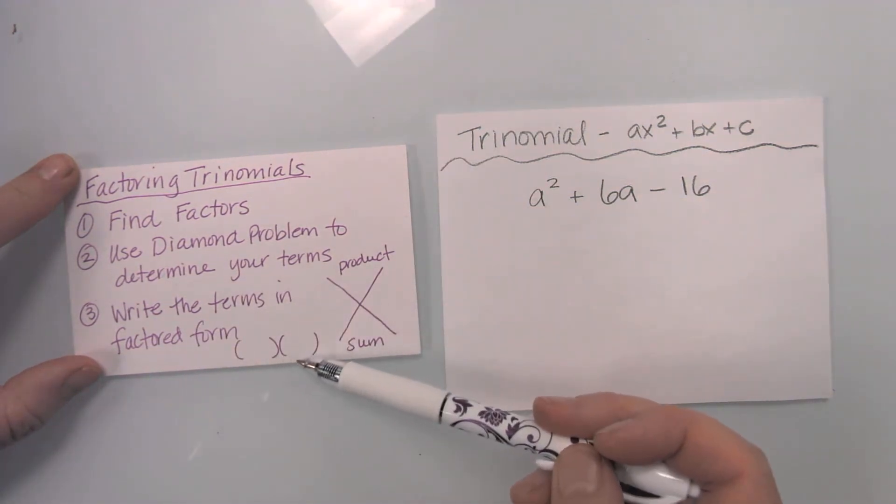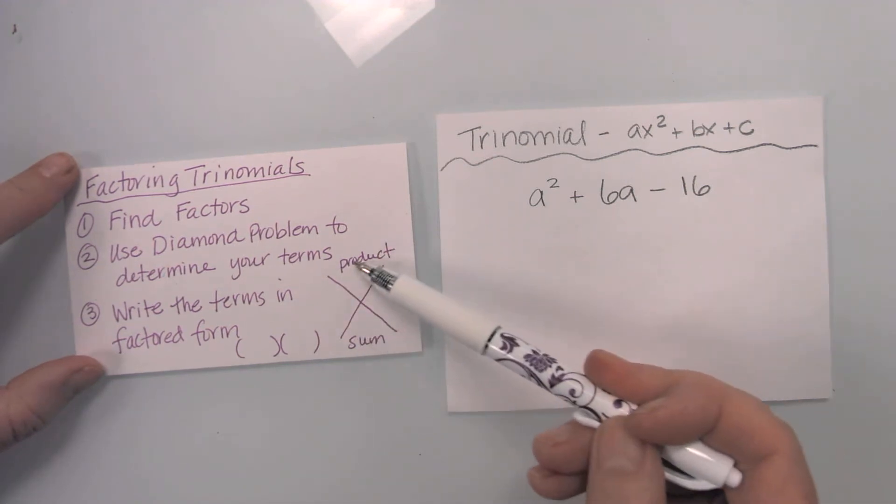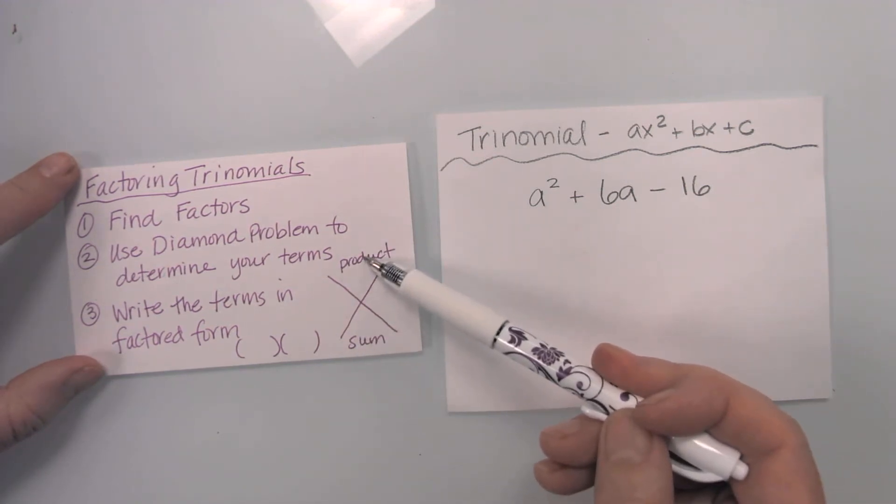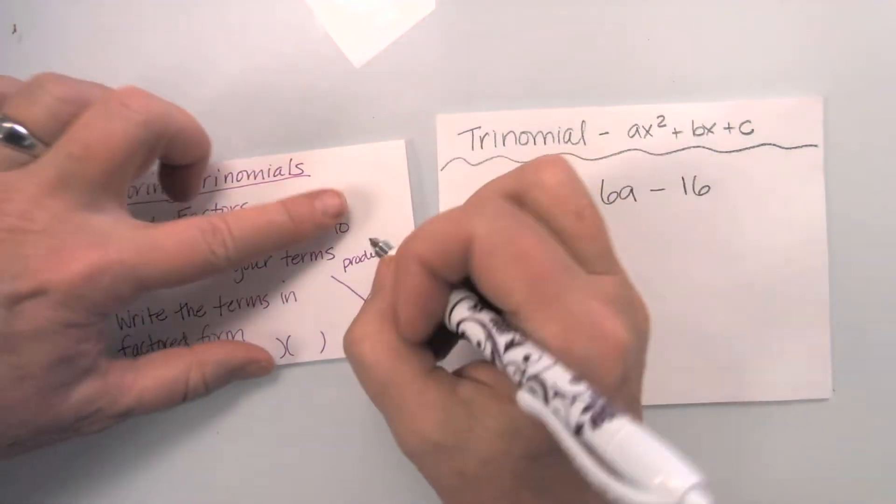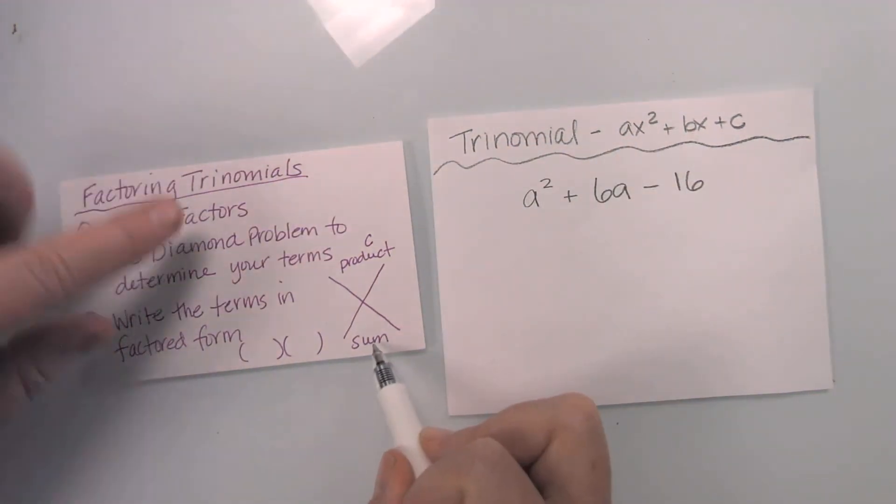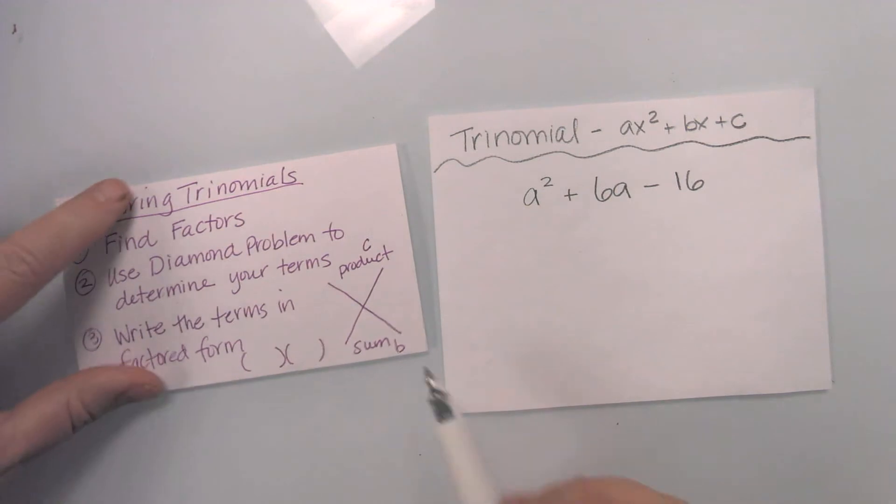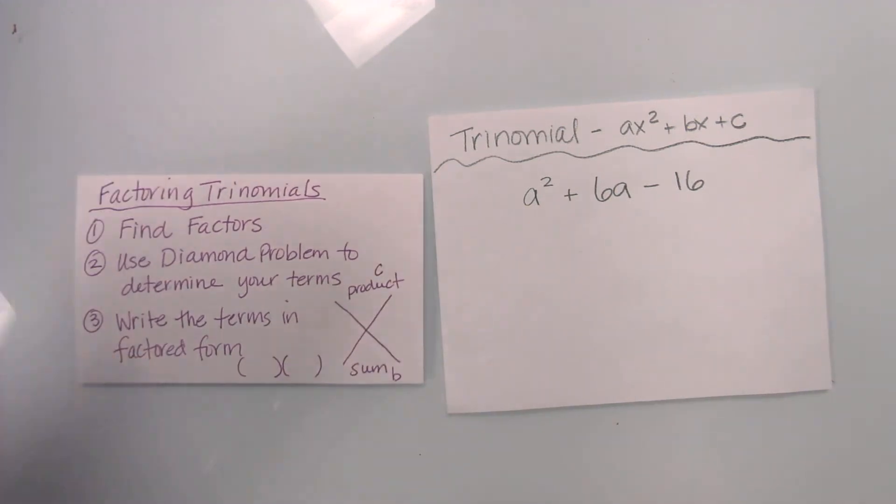Looks kind of like a binomial. Now remember my diamond problem. The product is up at the top, that is my C. And my sum is going to end up being my B. So I will show you how to do that in our example.